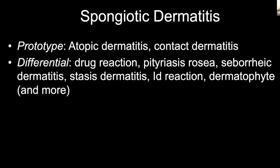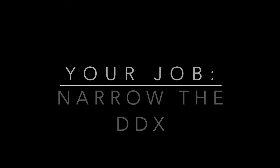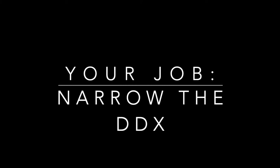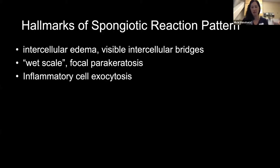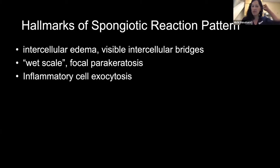Spongiotic dermatitis. Our prototype is atopic dermatitis and contact dermatitis, but there's a broad differential. The hallmarks of the spongiotic reaction pattern: the number one key thing is intercellular edema and visible intercellular bridges. We'll also talk about something called wet scale, and then show some examples of inflammatory cell exocytosis.